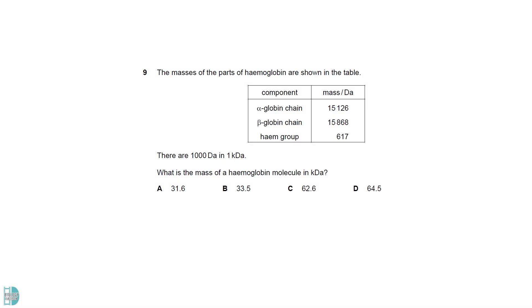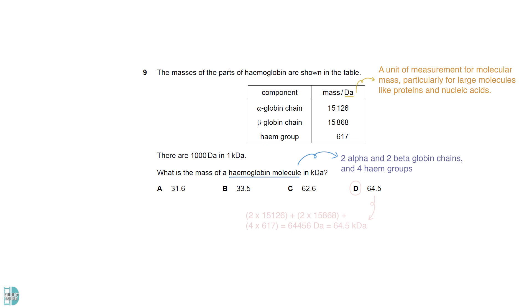Dalton is a unit of measurement for molecular mass, particularly for large molecules like proteins and nucleic acids. There are 2 alpha and 2 beta-globin chains, and 4 heme groups in a hemoglobin molecule. So, the mass is 64,456 daltons or 64.5 kilodaltons.